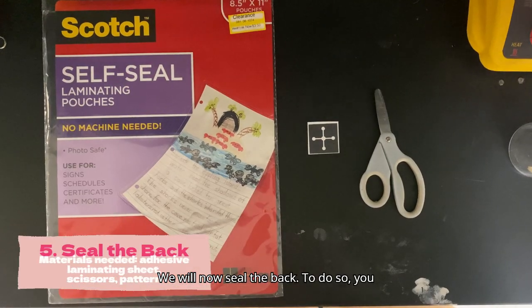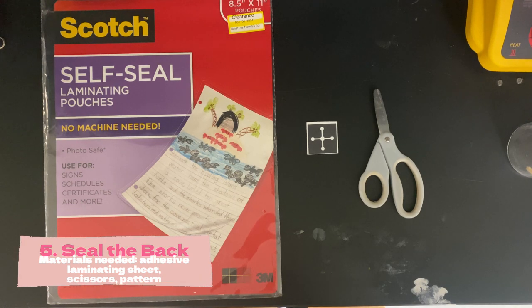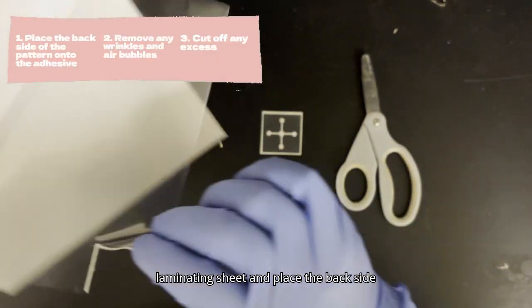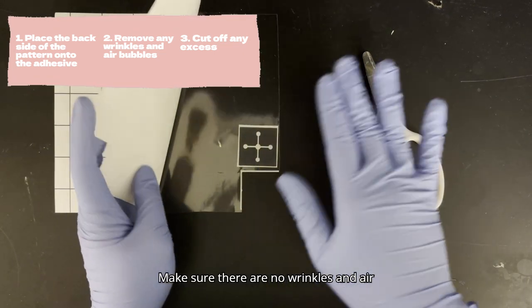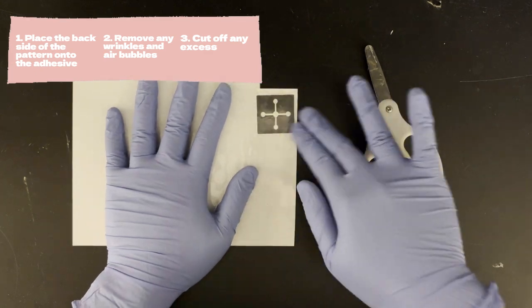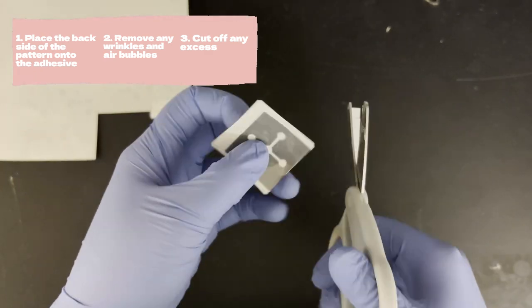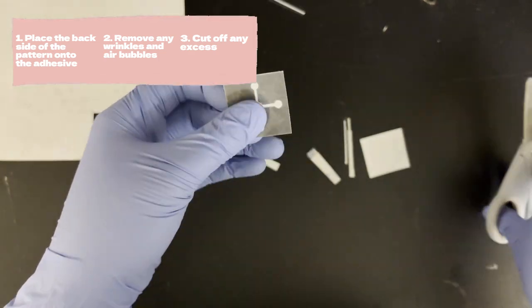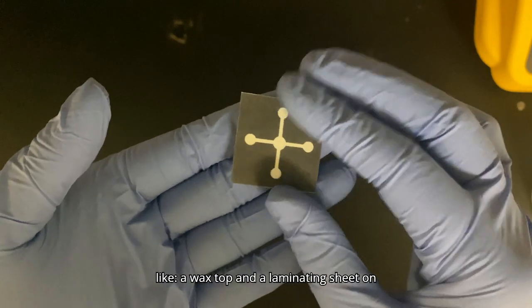We will now seal the back. To do so, you will need an adhesive laminating sheet, scissors, and the pattern. Peel open the adhesive side of the laminating sheet and place the back side of the pattern onto the laminating sheet. Make sure there are no wrinkles and air bubbles. Then cut off the excess. This is what the paper pad should look like, a wax top and a laminating sheet on the bottom.